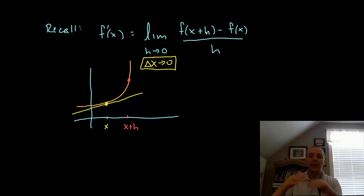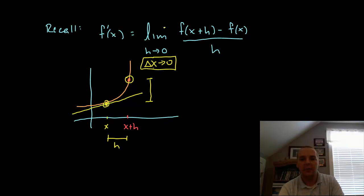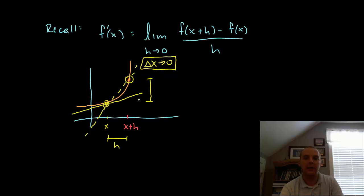What this is, in effect, is rise over run — this is like y2 minus y1. Here's f of x plus h, here's f of x, so when you subtract you're getting the rise between one point and another, divided by the run. The distance between x and x plus h is just h. Without the limit, that slope gives you something like a dotted line, which is not the same as the solid yellow tangent line slope.